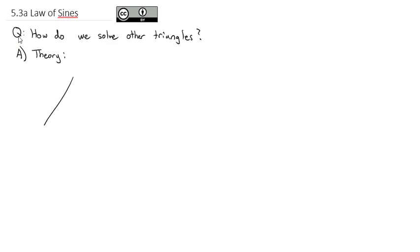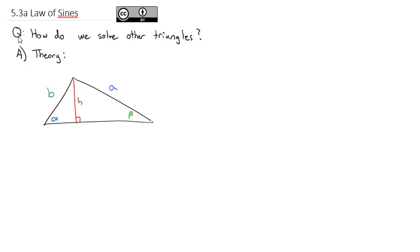Let's say I have some triangle that's not a right triangle. We'll give it two angles — angle alpha and angle beta, Greek letters to represent angles. We're going to label the opposite side from alpha as A, and the opposite side from beta as B. We're also going to drop the height down on this triangle, because when we drop the height, that will create two right triangles.